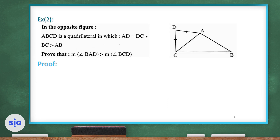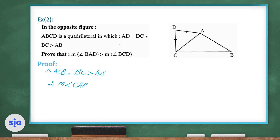Exercise number 2: In the opposite figure, ABCD is a quadrilateral in which AD equals DC and BC is greater than AB. We need to prove that the measure of angle BCD is greater than the measure of angle BAD. In triangle ACB, since BC is greater than AB (given), therefore the measure of angle CAB is greater than the measure of angle ACB — call this inequality number 1.